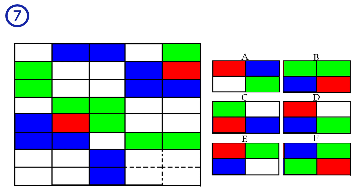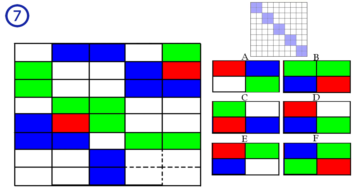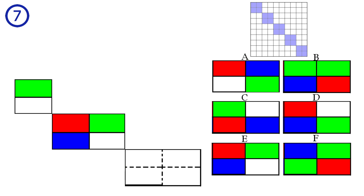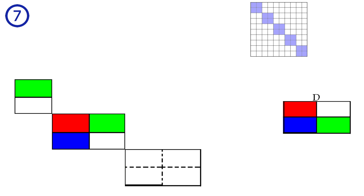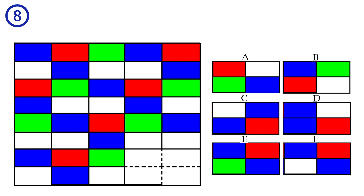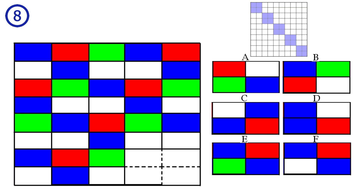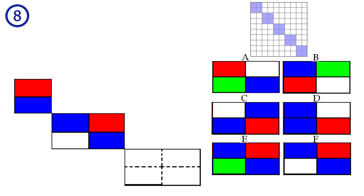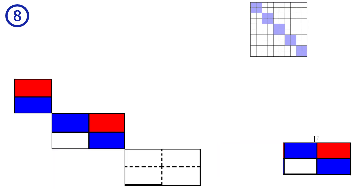Puzzle number seven. This puzzle is exactly the same as the previous puzzle. We have this pattern, and to solve the puzzle we go by these squares. Answer D is correct. Puzzle number eight. We have the same pattern. You solve it here, and you get answer F.